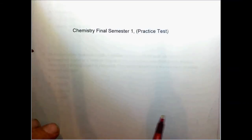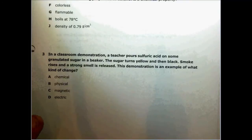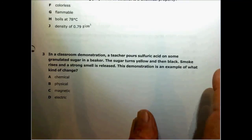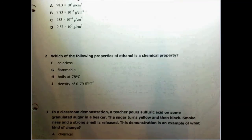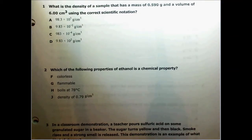Hi, today we're going to go over the chemistry first semester final exam practice test. The first question: what is the density of a sample that has a mass of 0.590 grams and a volume of 6 cubic centimeters?